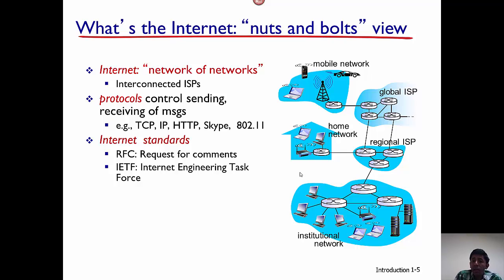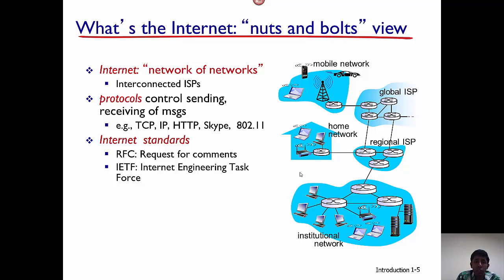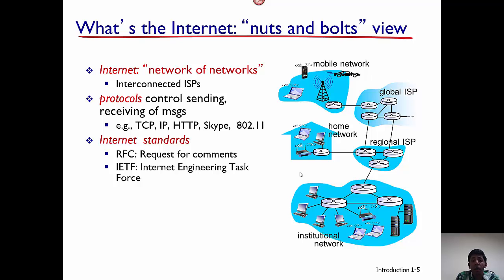Another important thing about the internet that we need to know is protocols. Consider two individuals — if they have to talk to each other, they have to speak a common language. Protocols are also a kind of language used to communicate between the hosts and different devices in the internet. For example, protocols that are used include HTTP, TCP, IP, Skype, etc. We'll look into each of these protocols in detail later. Protocols are used for sending and receiving messages in the internet and communicating among hosts.